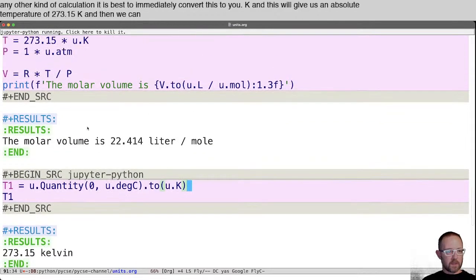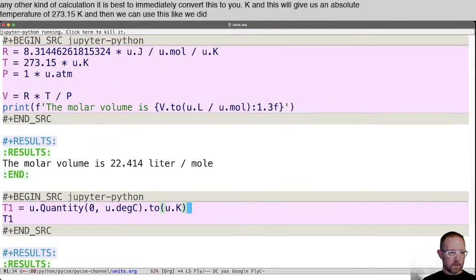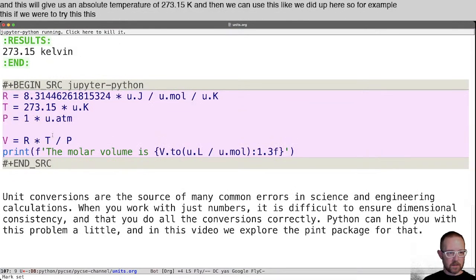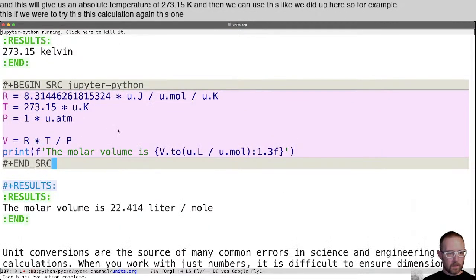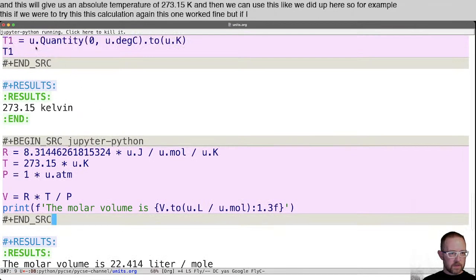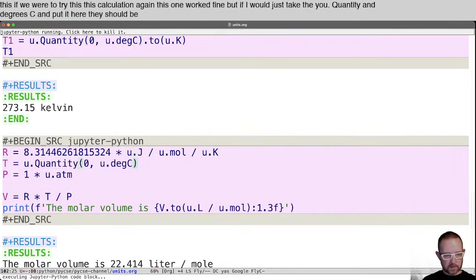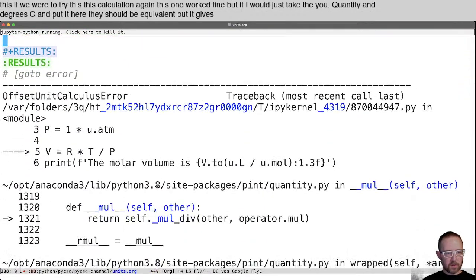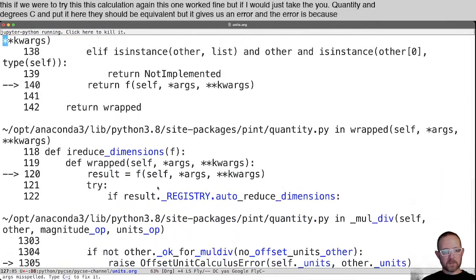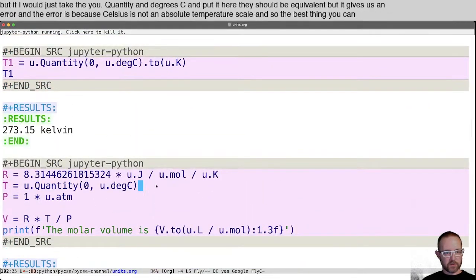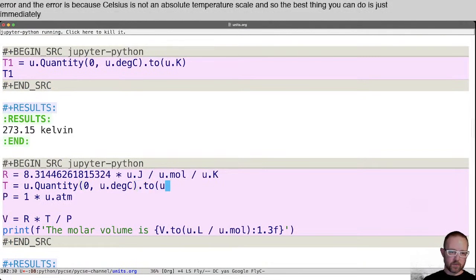So for example, this, if we were to try this calculation again, this one worked fine, but if I would just take the U dot quantity and degree C and put it here, these should be equivalent, but it gives us an error. And the error is because Celsius is not an absolute temperature scale. And so the best thing you can do is just immediately convert it to absolute temperature.